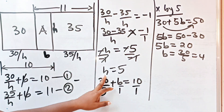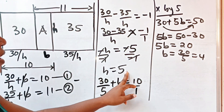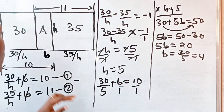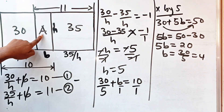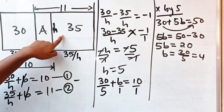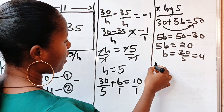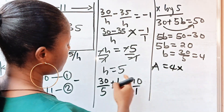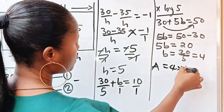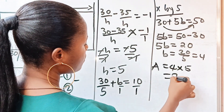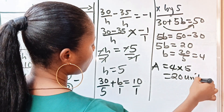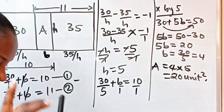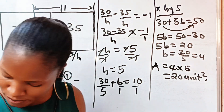So now we have h equal to 5 and b equal to 4. The area A is b times h, so area is 4 times 5, which gives 20 units squared — just like we found using the first method.